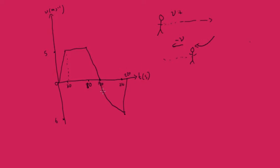Here we don't have a straight line — we have a curve to indicate that he's accelerating, first quickly, but then the rate of acceleration decreases as he reaches his maximum speed. And in this section there should be a straight line because it's a constant deceleration back to the starting point.